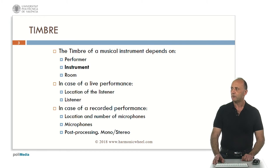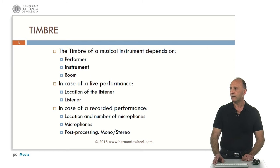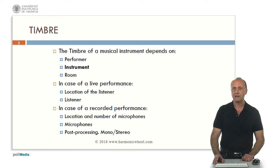The timbre of a musical instrument depends on, on the one hand, the performer, the instrument itself, and the acoustic room. On the other hand, in the case of a live performance, on the location of the listener and the listener himself or herself. And in the case of a recorded performance, on the location and number of microphones, the type of microphones, and the post-processing. The result can be mono or stereo.